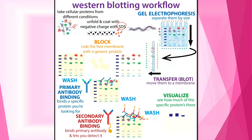We run electrophoresis and separate the proteins on a molecular weight basis. We transfer the proteins onto nitrocellulose paper, then treat with a primary antibody. The primary antibody is suitable for our target protein. We select and apply the primary antibody, then remove it and treat with a secondary antibody.